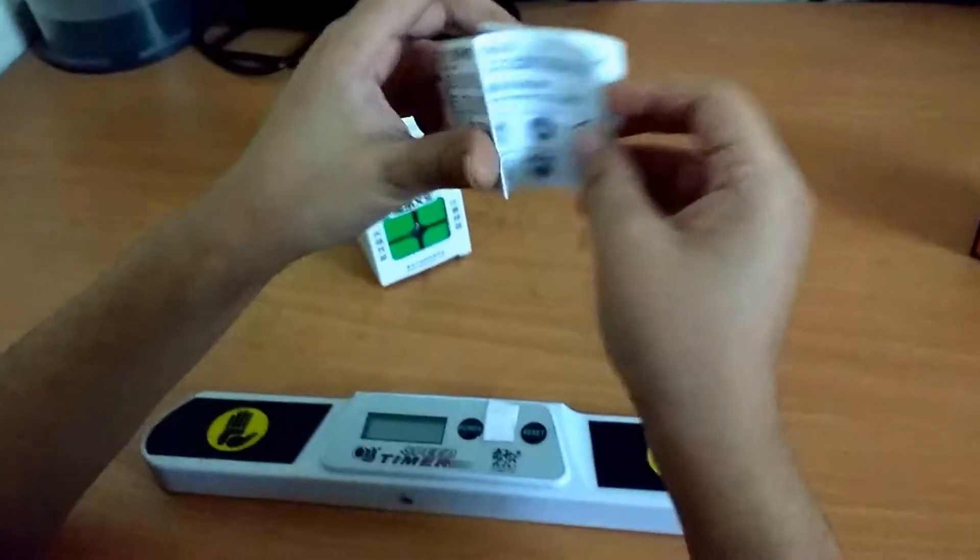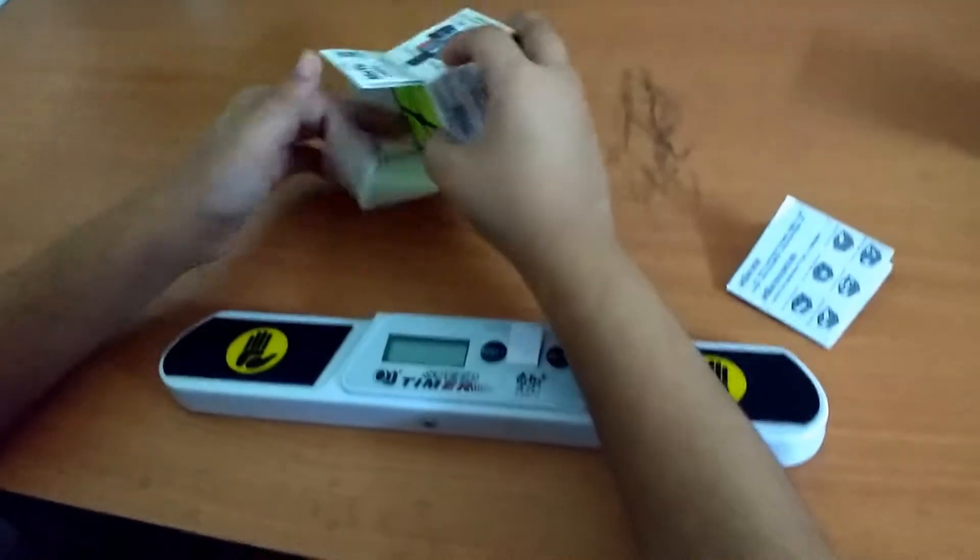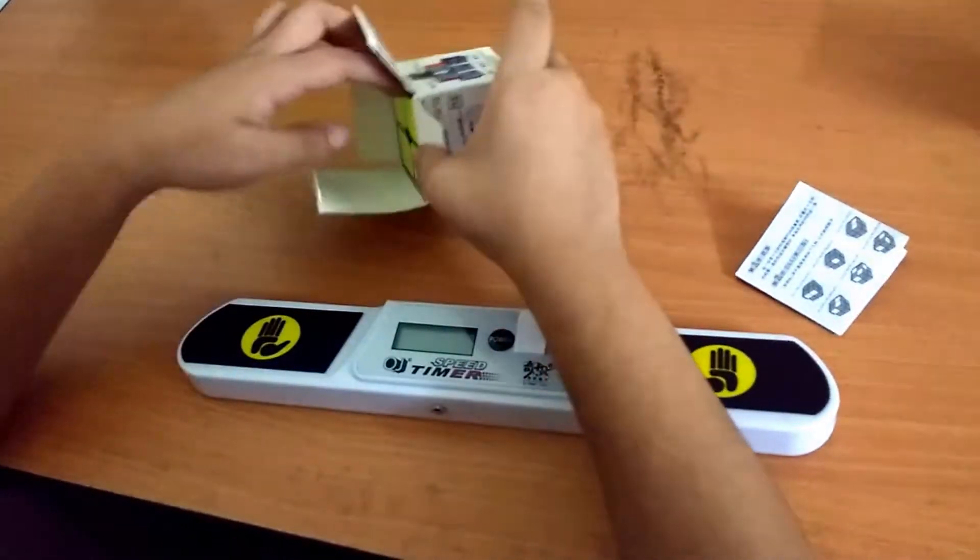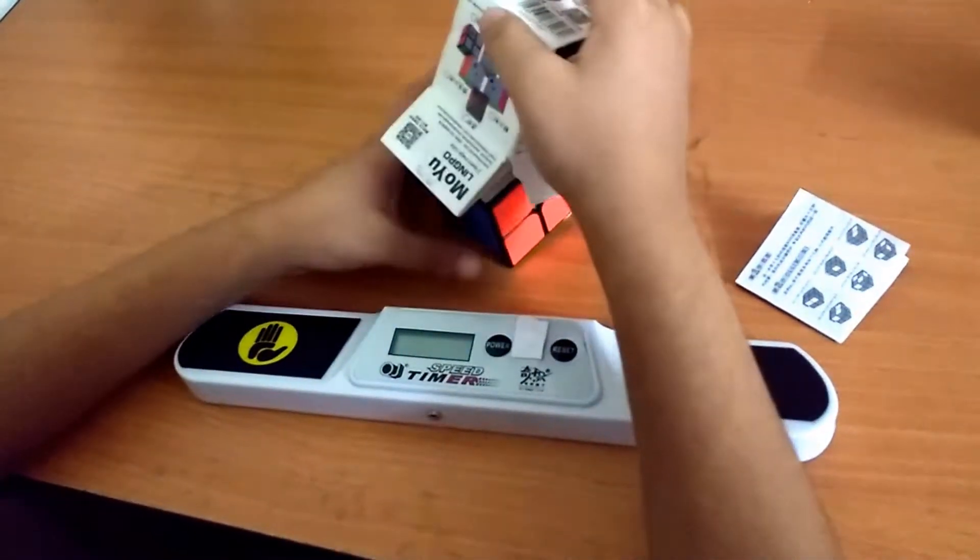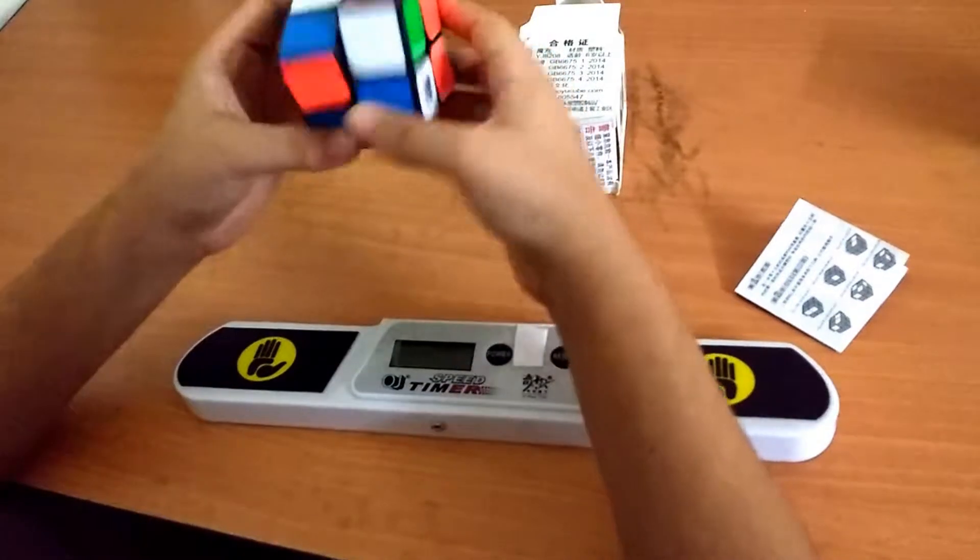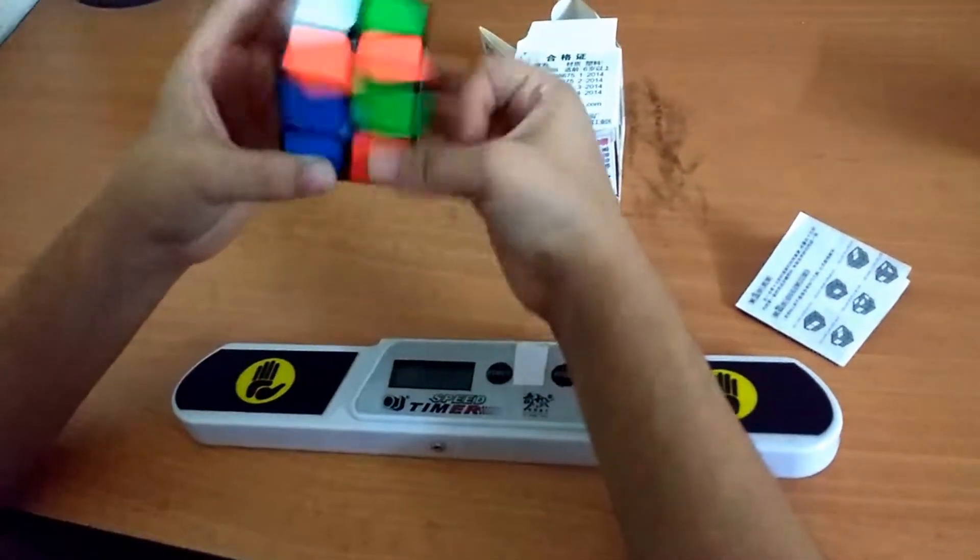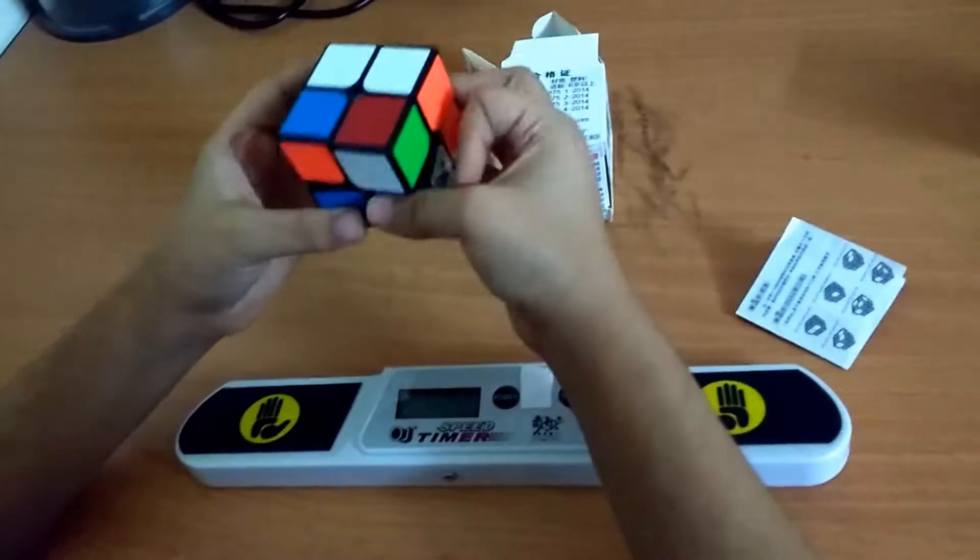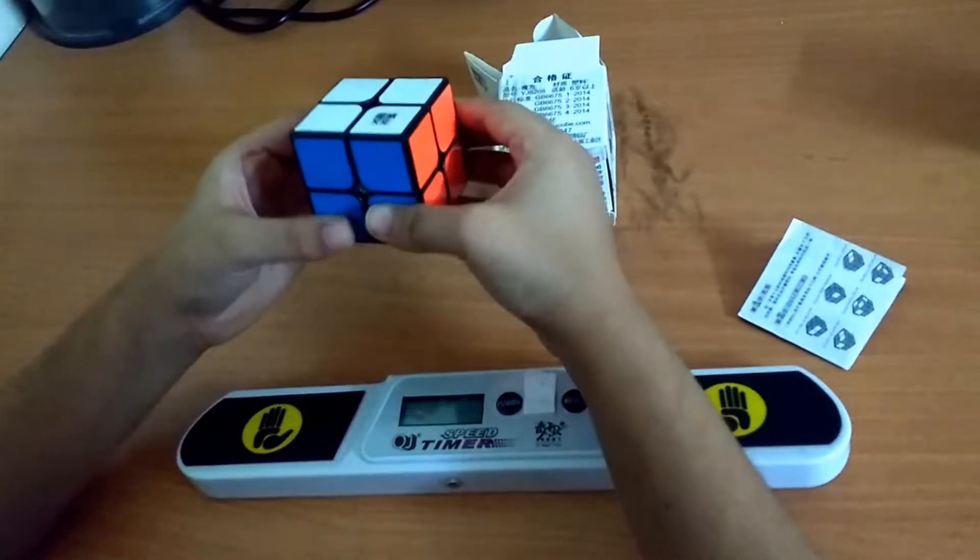Then we go on to the cube itself. This cube comes lubed and tensioned with no reason to set it up, and it's nice and fast. Another thing is that it's also controllable.